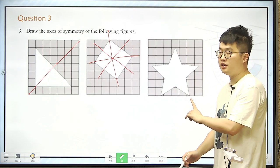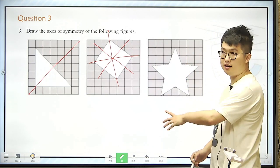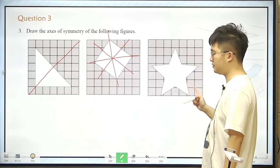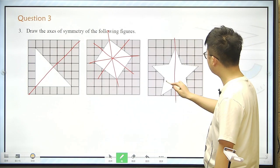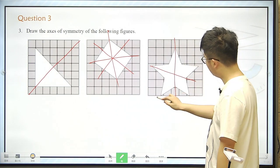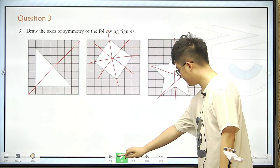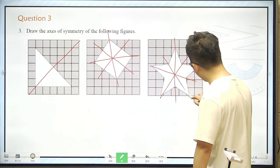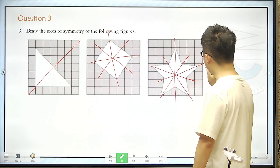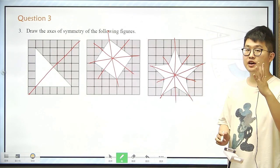And the last one is a star. It's a star with five points, with five edges. So there are one, two, three. Sorry, it goes this way. Three, and four, and five. There are five axes.